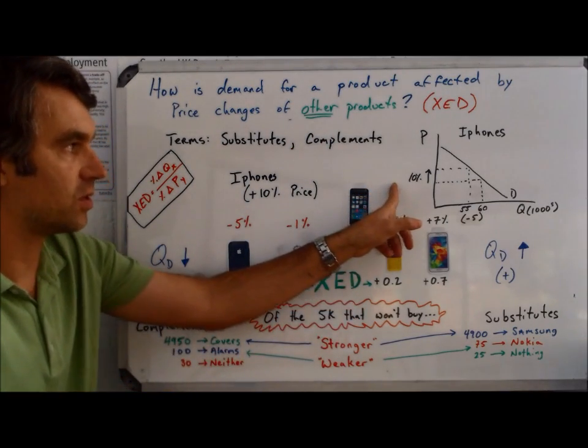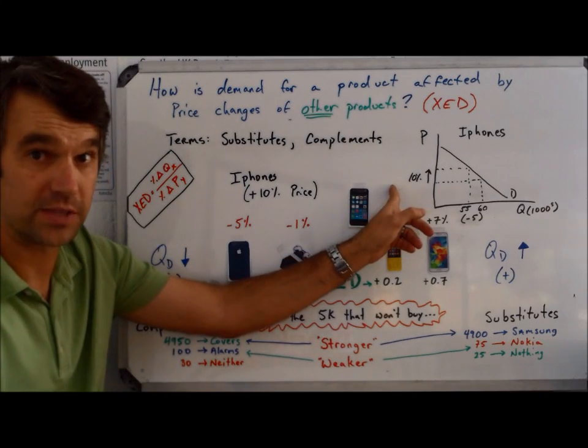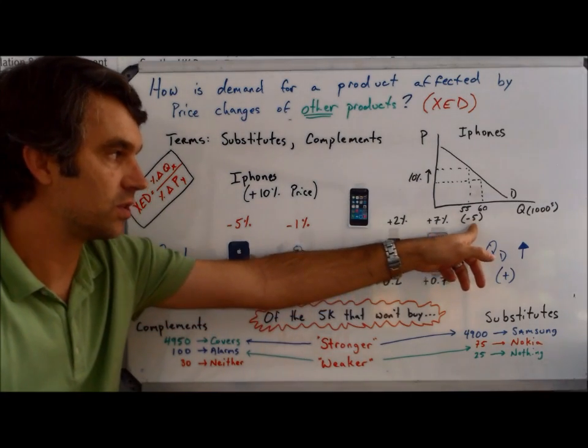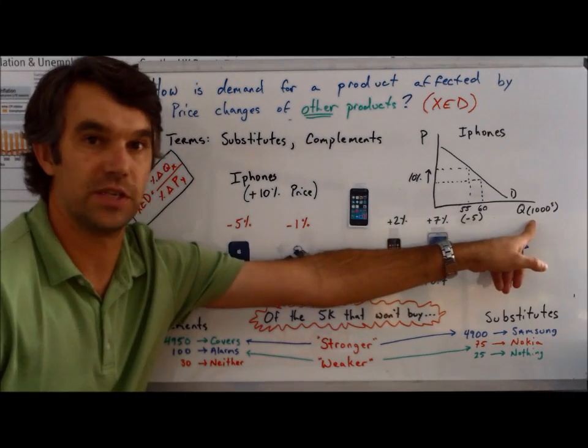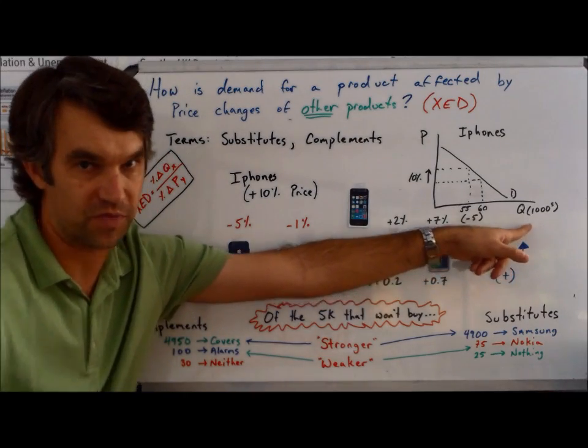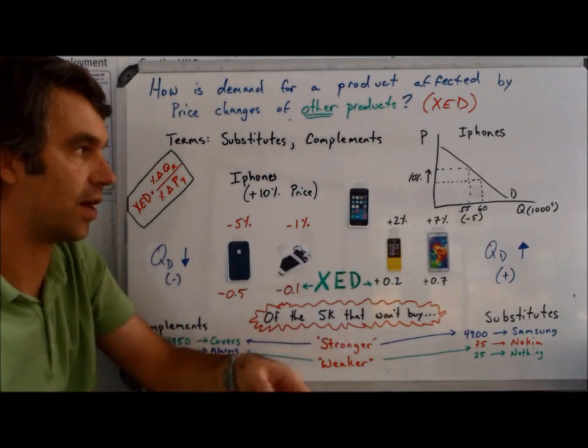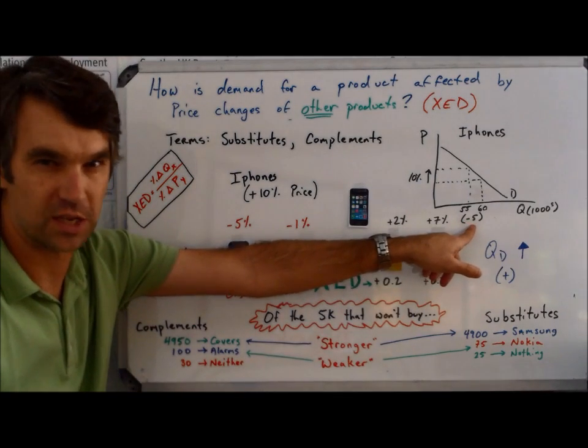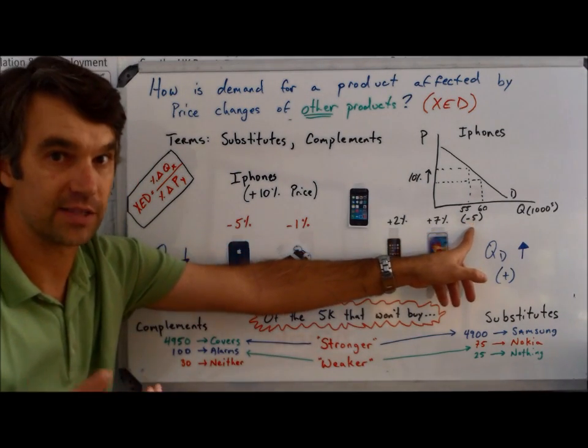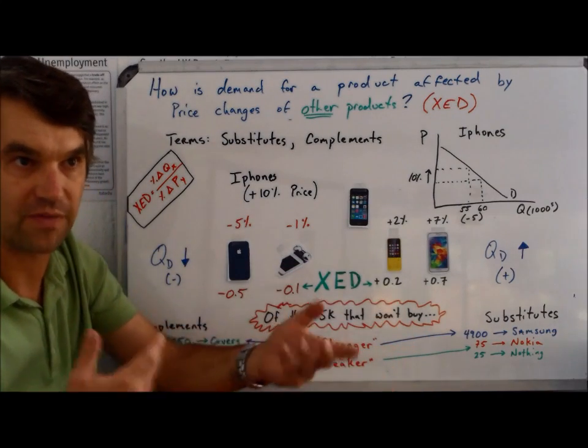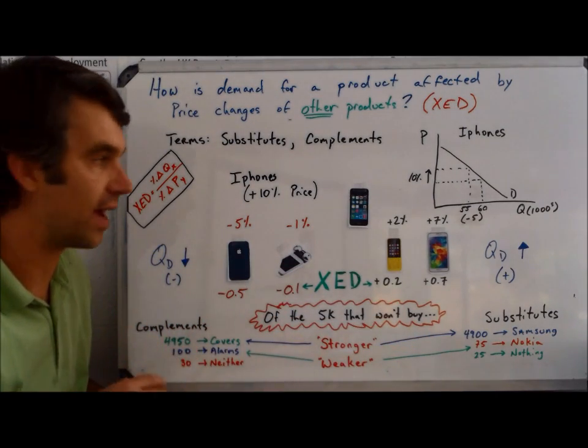In this example, these goods are product X. We care about what's happening to these goods because of a change in price of another product, the iPhone. So we've had a 10% change in price or increase in price in iPhones, and as a result, they've lost 5,000 of their customers. All that matters for our analysis is that 5,000 fewer people are going to buy the iPhone.